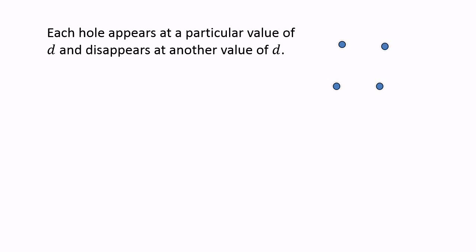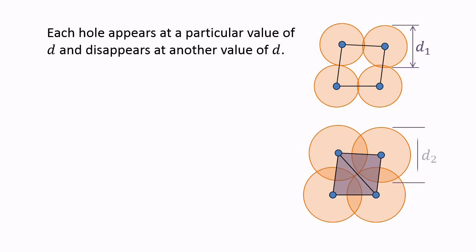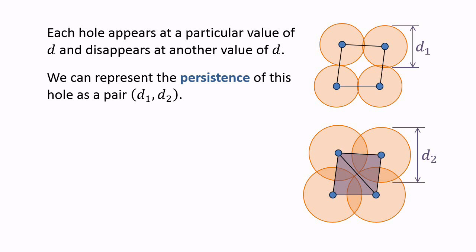For example, consider these four points. There is some smallest distance, this d1, which is just large enough for these four edges to appear, creating a hole in the middle. For the same configuration of points, there is another distance, this d2, which is just large enough for an edge to appear between opposite points. This completes two triangles that get filled in, and the hole disappears. So the hole appears at distance d1, and disappears at distance d2. We can represent the persistence of this hole as a pair, d1, d2.